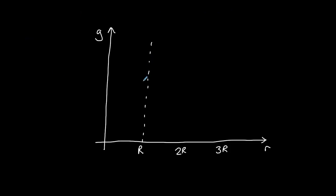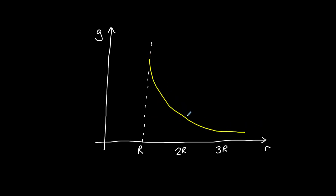Let's briefly consider how the gravitational field strength varies with distance from the Earth. If we plot a graph of g against R, it decreases as we move away from the Earth's surface according to the inverse square law. Note that capital R here represents the surface of the Earth, so zero on the graph is the centre of the Earth. If we double the distance from the centre of the Earth, the field strength decreases to about a quarter of its original value.